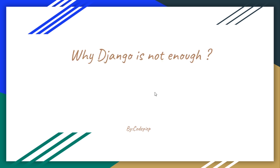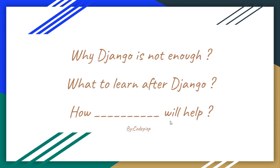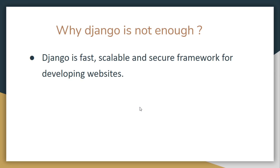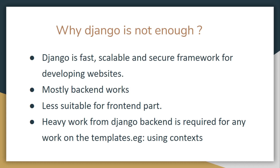We will try to answer these three questions: why Django is not enough, what to learn after Django, and finally how it will help us. Django is a fast, scalable, and secure framework for developing websites — there is no doubt in that. But it is mostly related to backend work like creating models and hosting applications. What it lacks is that it is very less suitable for the frontend part. Yes, we have templates and HTML, but we are only using basic HTML and CSS. For any change in templates or HTML files, we need to communicate with the Django backend — models, views, templates, etc. — to get anything done. So Django is not very suitable for frontend.